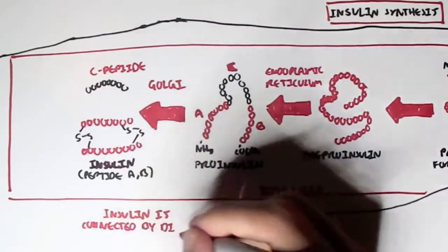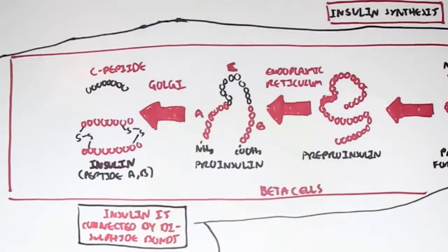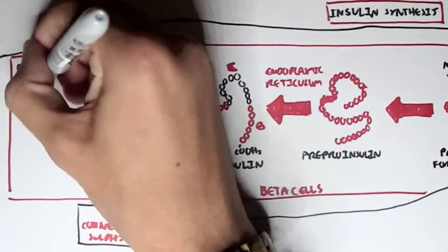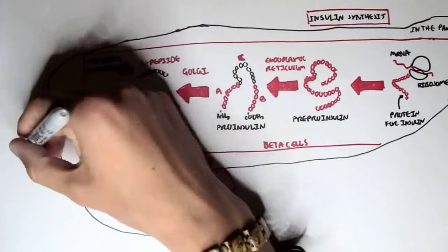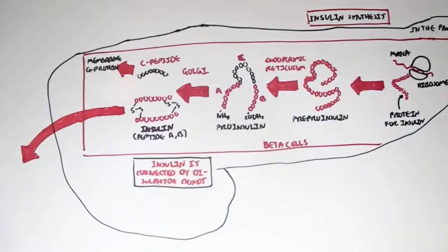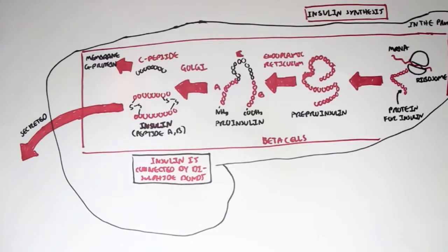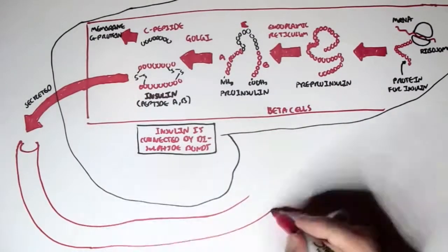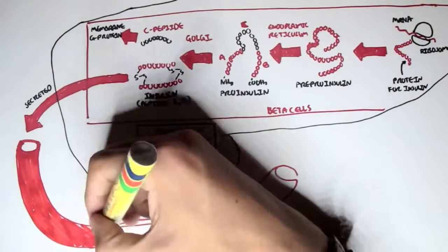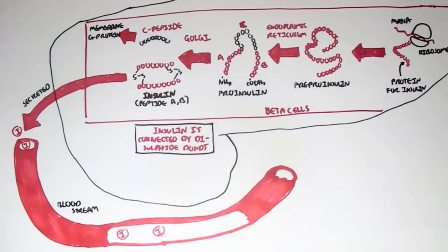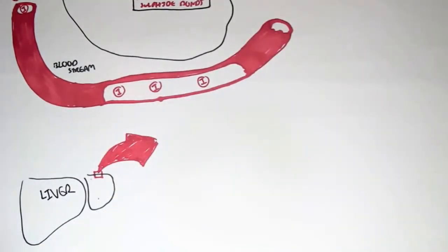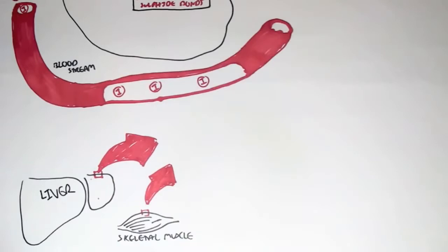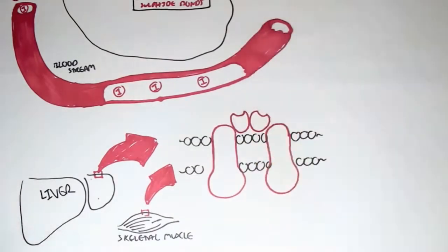Insulin is connected by disulfide bonds from the A and B peptides of pro-insulin. The C peptide has a role at the cell membrane for G protein signaling. This insulin can then be secreted into the bloodstream where it will travel to its target tissue or associated organs, such as the liver or skeletal muscle. Now let's zoom into the membranes of the skeletal muscle and liver.